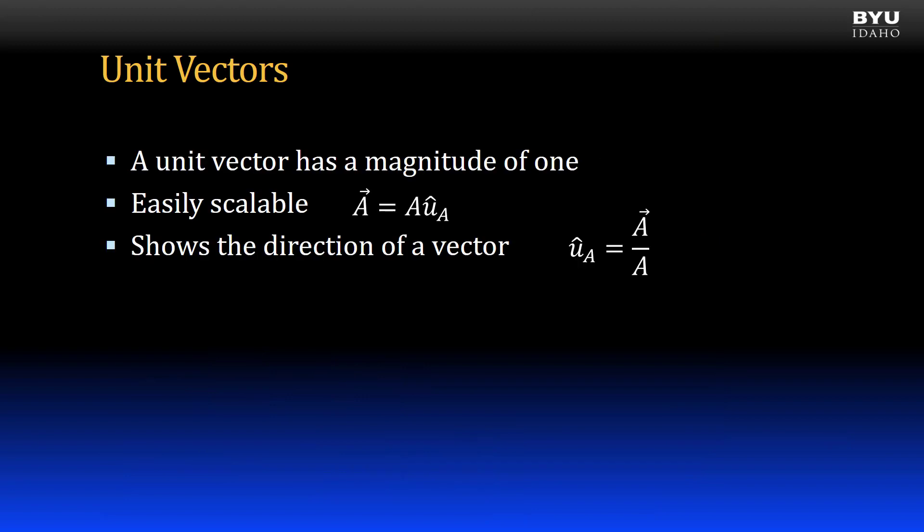In summary, a unit vector is a vector with a magnitude of 1. Because of that, it is easily scaled by multiplying by a scalar. The unit vector can be used to show the direction of a vector and is found by dividing a vector by its magnitude.